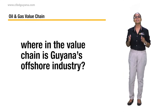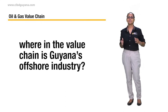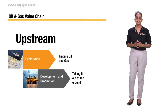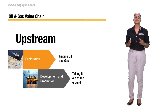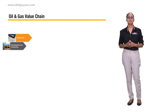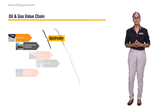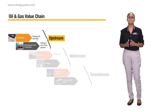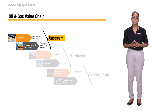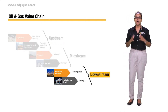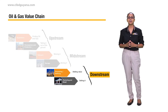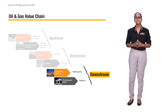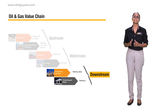So, where in the value chain is Guyana's offshore industry? Offshore oil and gas activities in Guyana are in the upstream segment. For example, Exxon is both in the exploration and development stages. Production has not yet started in Guyana. Other oil and gas operators are in downstream, in the retail segment, selling into Guyanese markets via gas stations.